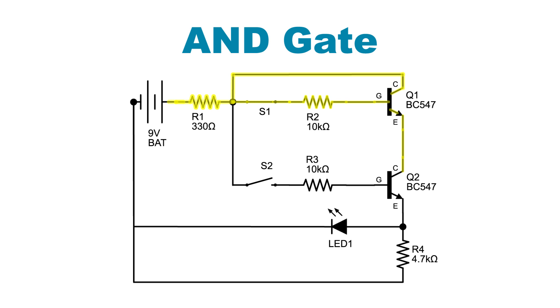If only one switch is closed, the other transistor acts as a blocker, preventing a connection between power and ground. Both switches need to be closed to supply power to the base of both transistors, allowing current to flow through the collectors and emitters of both transistors to the LED.